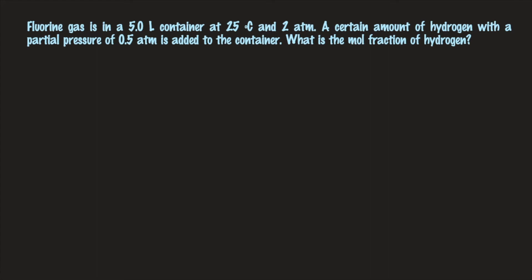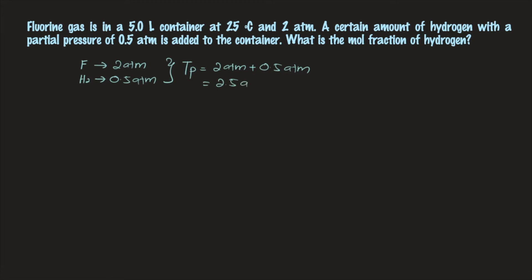Question number 4. Fluorine gas is in a 5-litre container at 25°C and 2 atm. A certain amount of hydrogen with a partial pressure of 0.5 atm is added to the container. What is the mole fraction of hydrogen? There are two gases involved — fluorine and hydrogen — with partial pressures of 2 atm and 0.5 atm respectively.